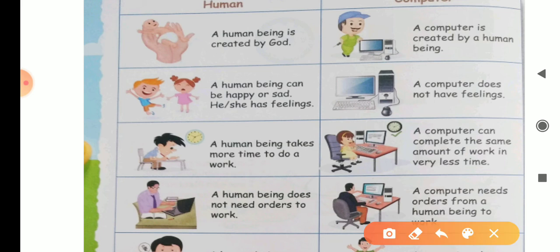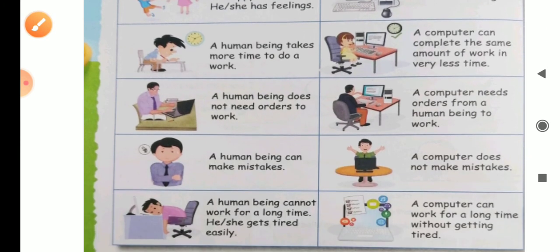Next is, a human being takes more time to do a work. Dear students, we have taken an example. If we give all the numbers to total you, then you will take a lot of time. But a computer can complete the same amount of work in a very fast time.